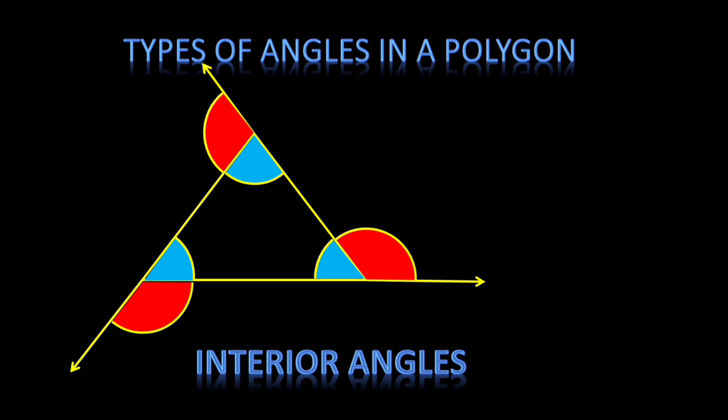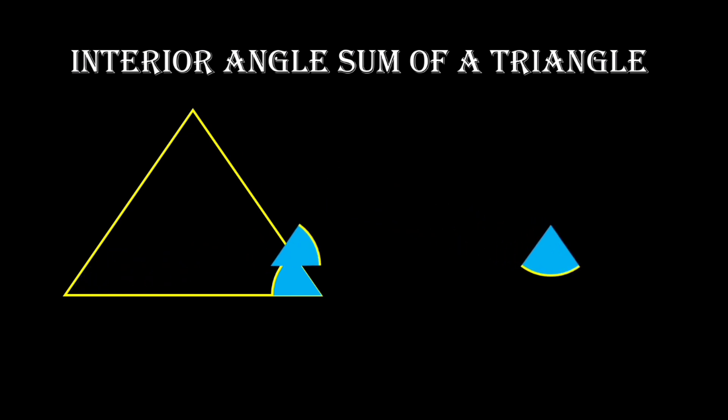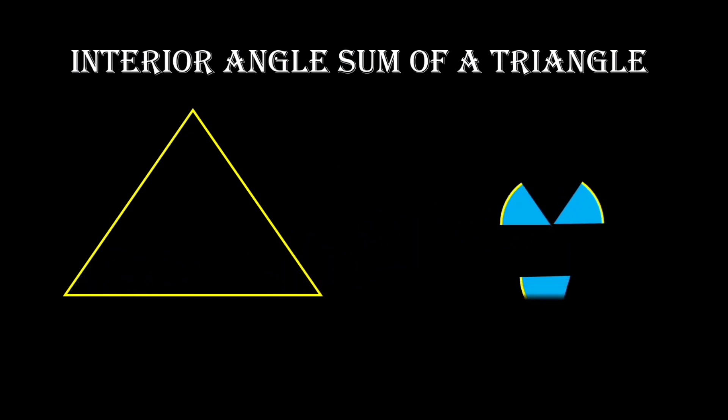So in any polygon there are two sets of angles: interior angles and exterior angles. Let us discuss what is the sum of the interior angles of a polygon and what is the sum of the exterior angles. We know that triangle is the simplest polygon, so let us first find the angle sum of a triangle. A triangle has three sides and three interior angles.